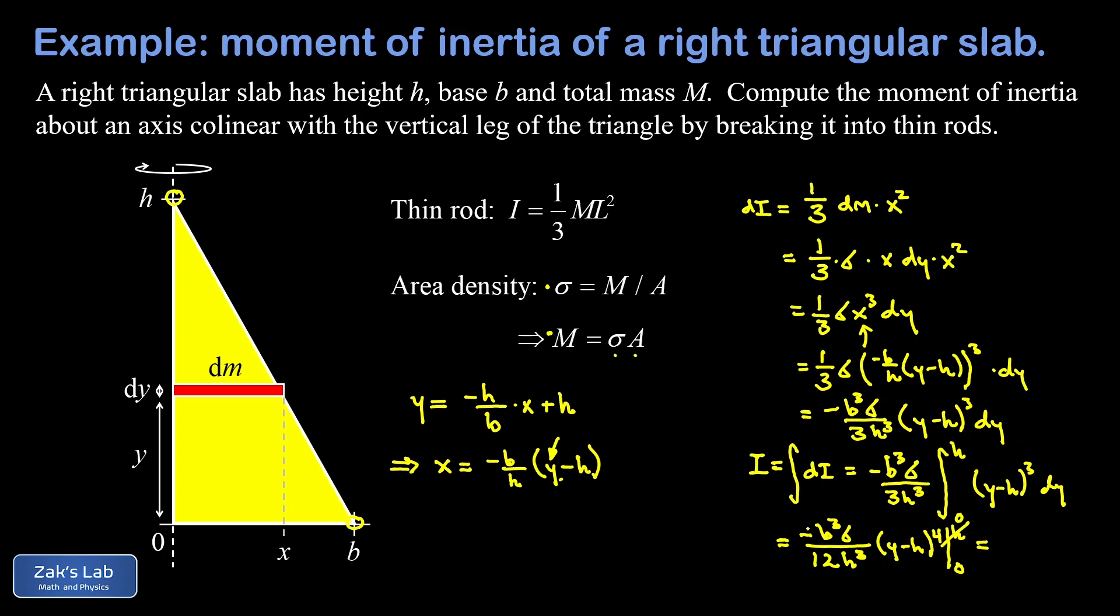That lower limit was subtracted, which is going to fix this minus sign out in front, and I end up with a positive b cubed sigma times h - remember we had h to the fourth but three of them cancelled out - and then divided by 12.